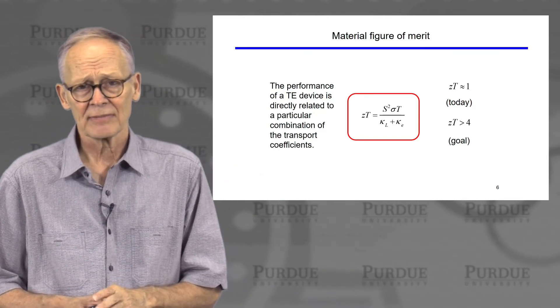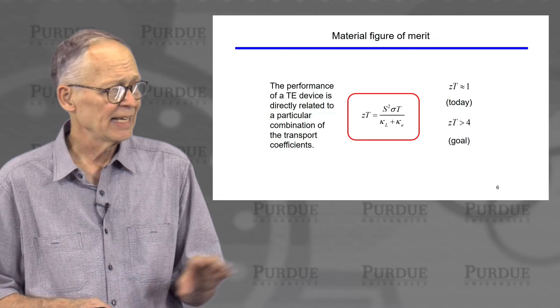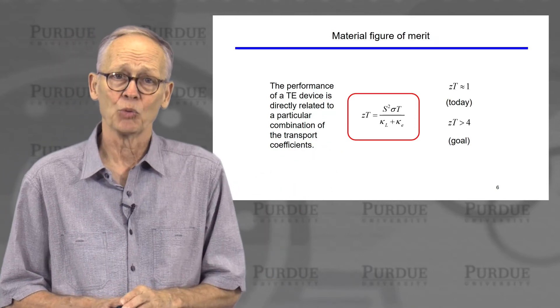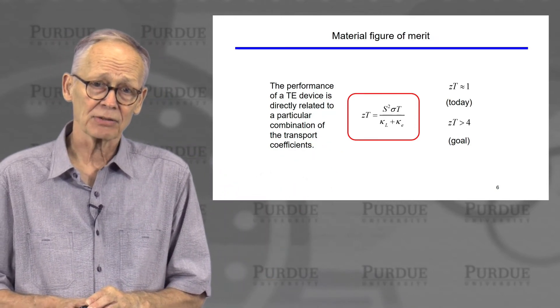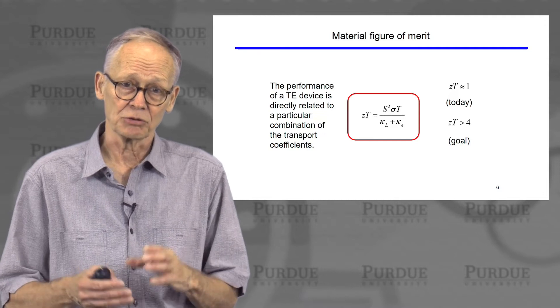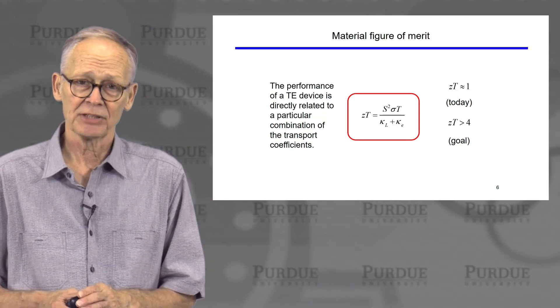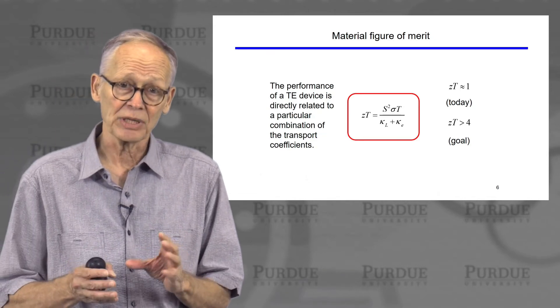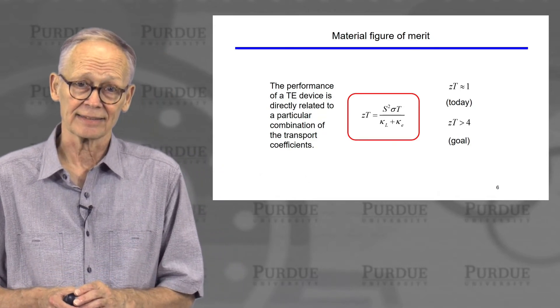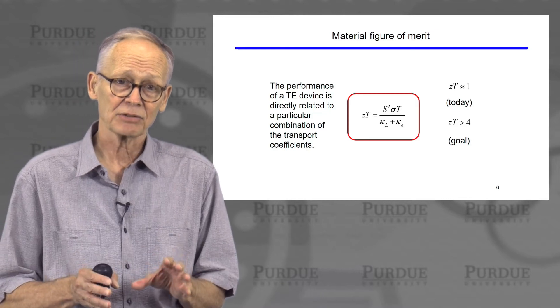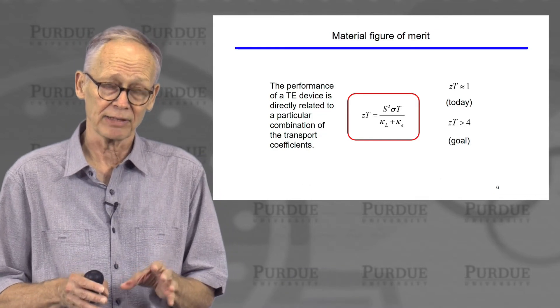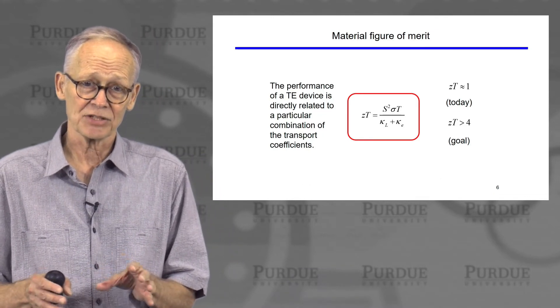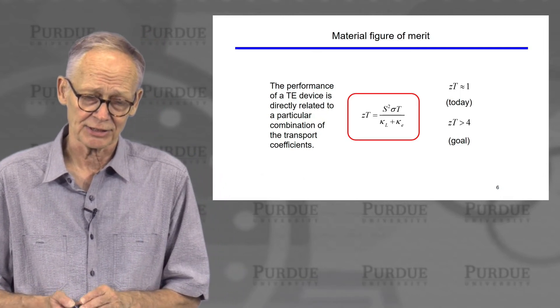Today, commercial thermoelectric technology has a figure of merit of about one. If the figure of merit could be increased to three or four, the potential applications would dramatically increase. And there are recent successes in the laboratory of increasing this material figure of merit, which sort of set the stage for technologies that could have much broader applications.